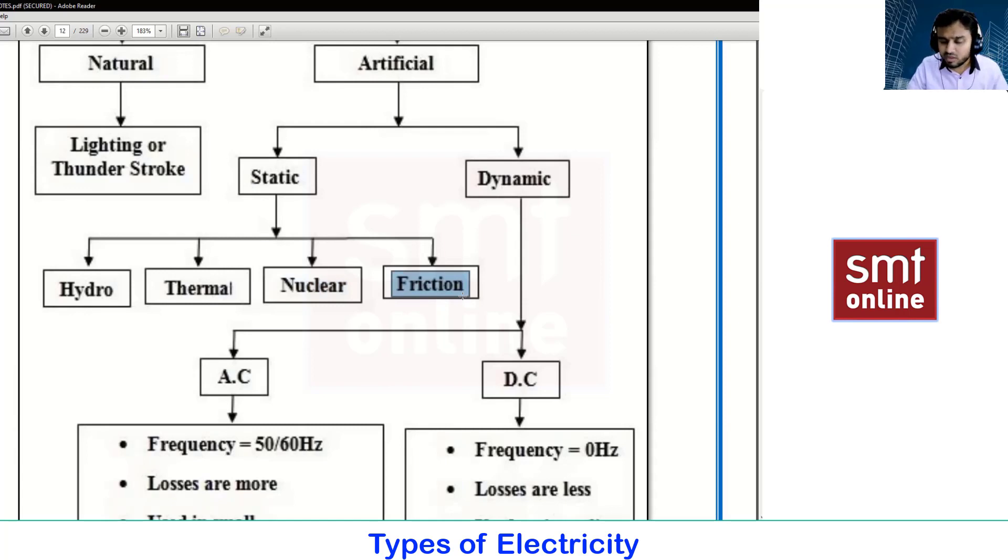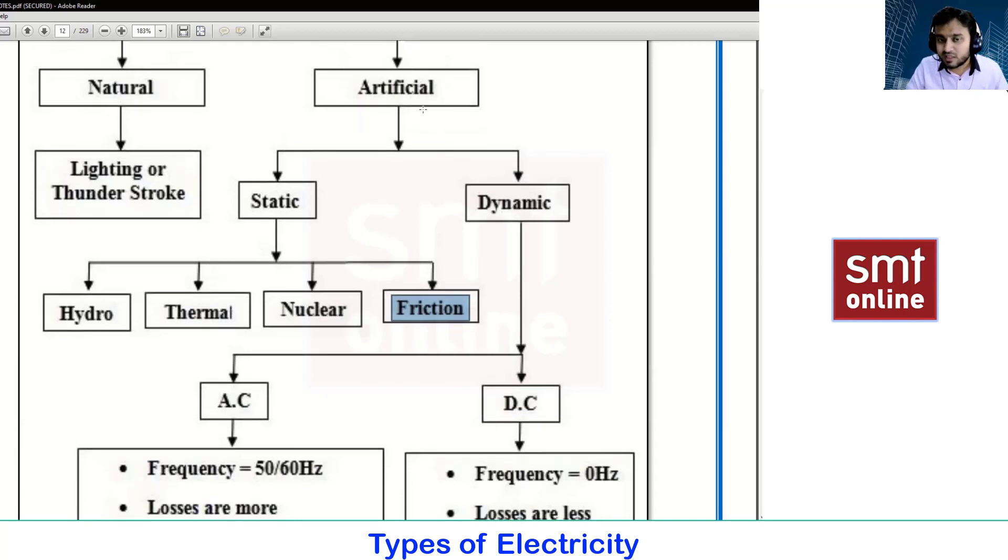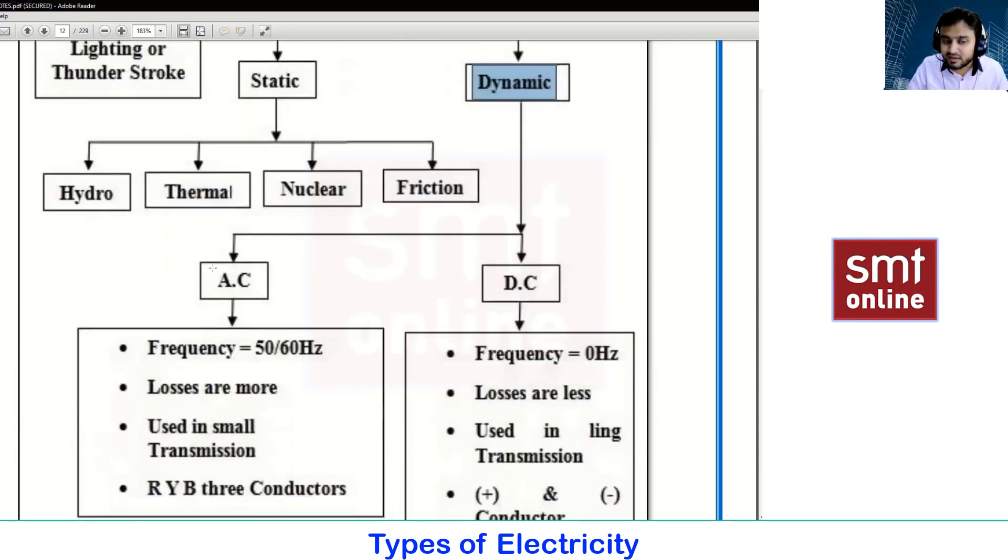You can check the i3b blog where you'll find hundreds of research papers where we are getting energy from the frictional process. The same artificial concept we are going to derive in terms of dynamic, because electricity is classified in terms of alternating current and direct current.